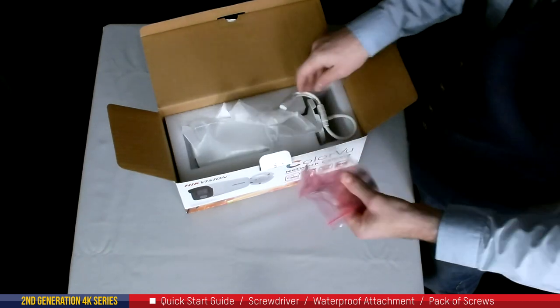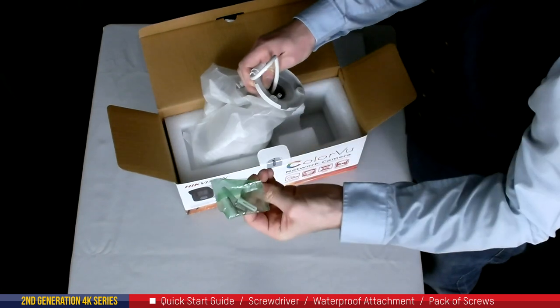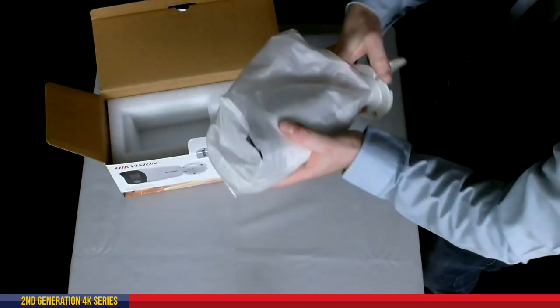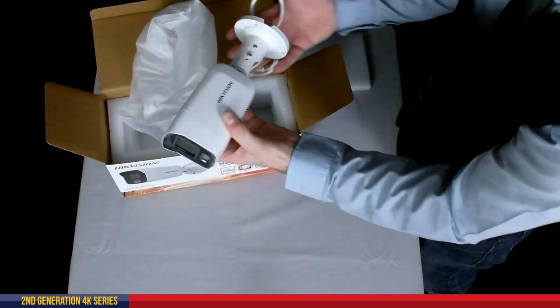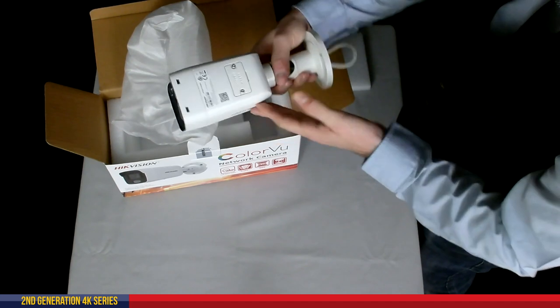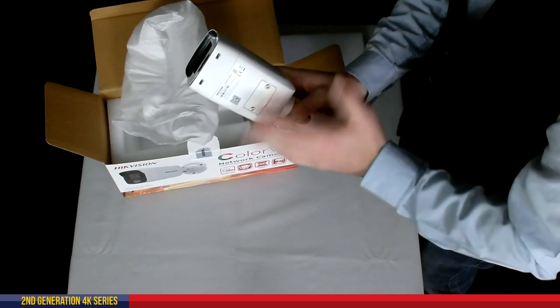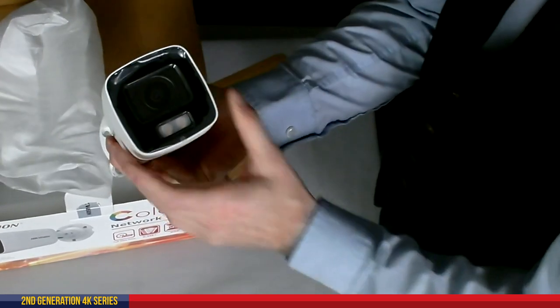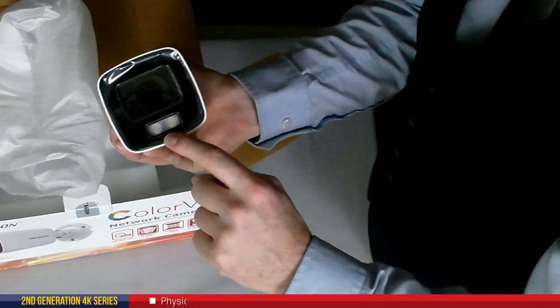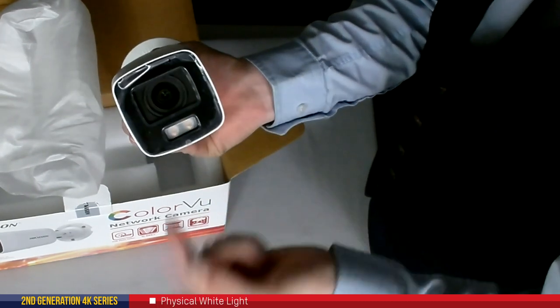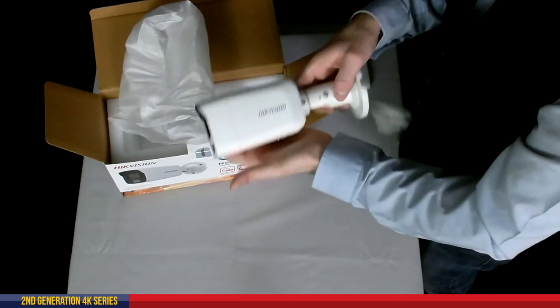Then inside, security screwdriver, waterproof attachment, pack of screws and then we also have the camera itself. So on this one because this is a mini bullet so it's a lot smaller in size, a bit more discreet, a bit more subtle, still has facility for a micro SD card to go in there again for using that ANR technology and on the front of this one again no IR illuminator, it's got the physical white light to put physical light onto the scene. This one also has a built-in microphone as well so it can record sound in the scene as well.